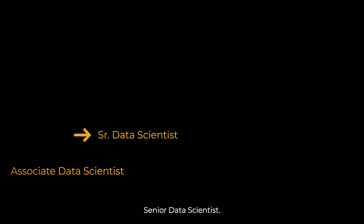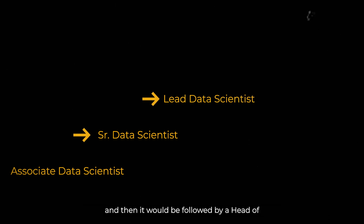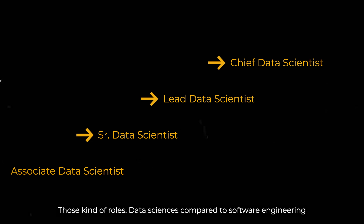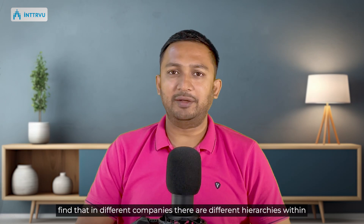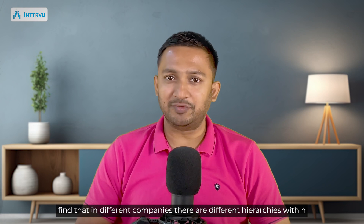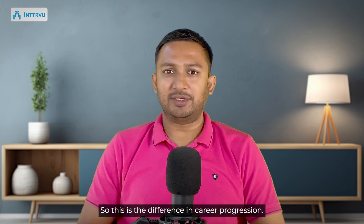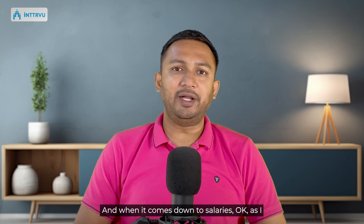In data science, in most companies you would start as an associate data scientist or data scientist, then after three to five years become a senior data scientist, followed by lead data scientist, and then head of data science or chief data scientist. Data science is a relatively new skill set compared to software engineering, so this hierarchy is still getting defined and you will find different hierarchies within data science across different companies.